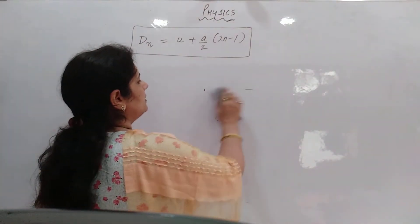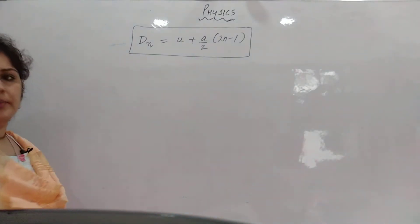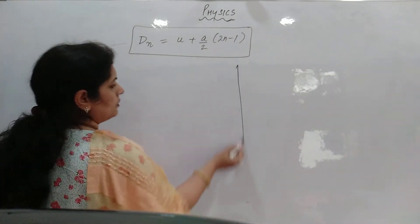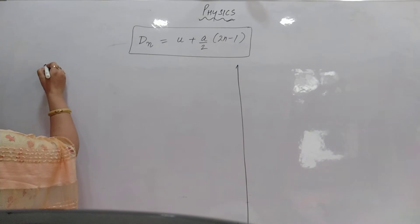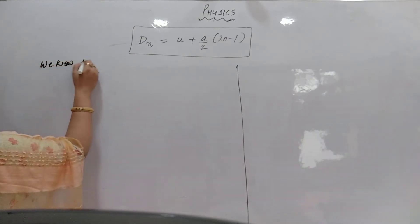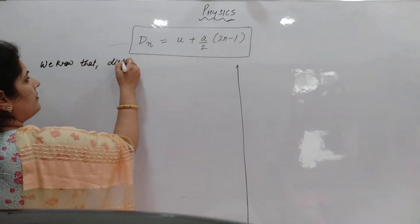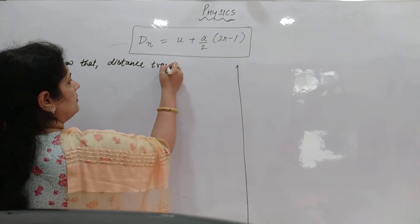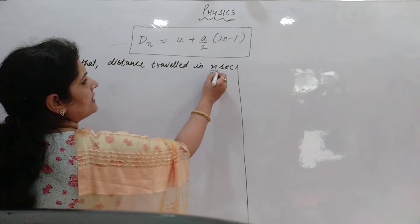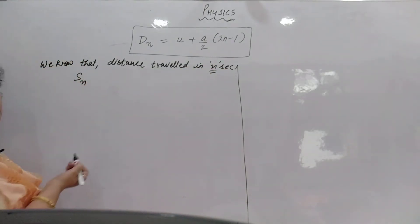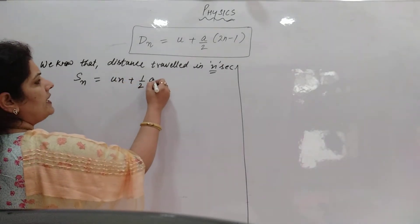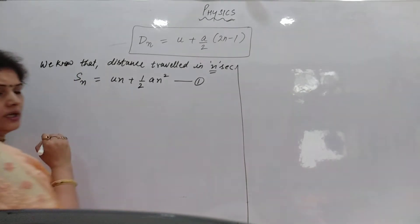Now we are going to prove this. First, we will prove it by the arithmetical method. We know that total distance travelled in n seconds — let us name that as Sn. Sn is equal to un plus half an squared. Let us name this as equation 1.